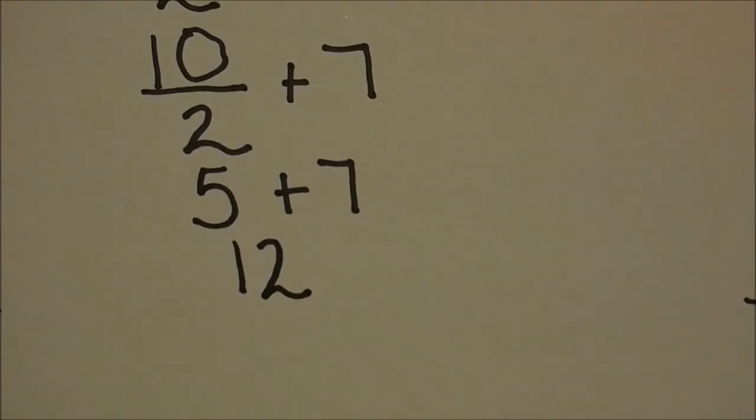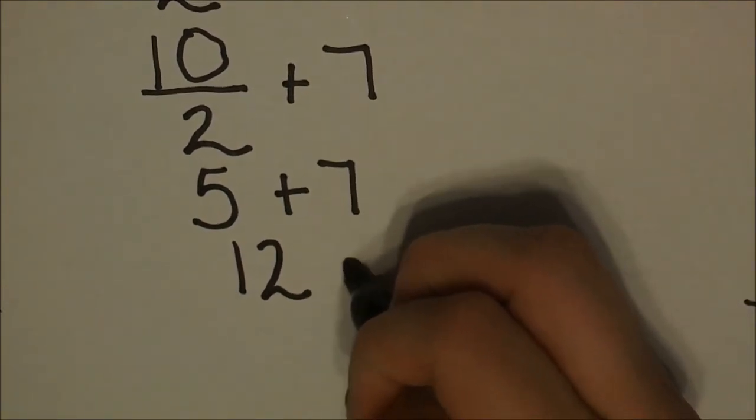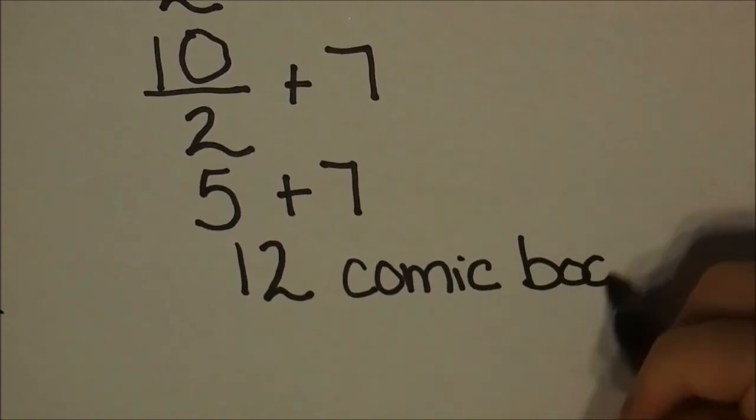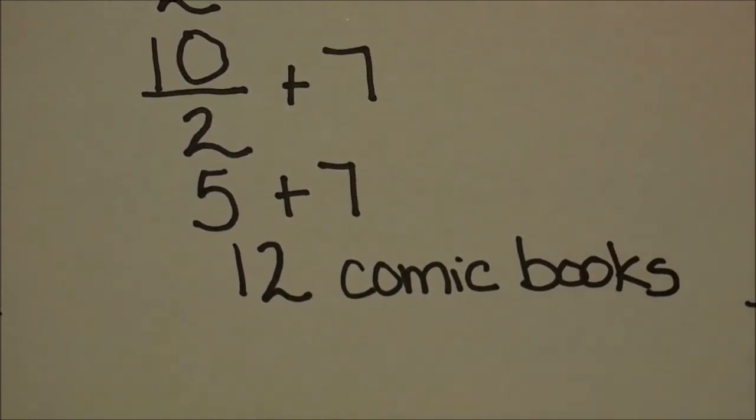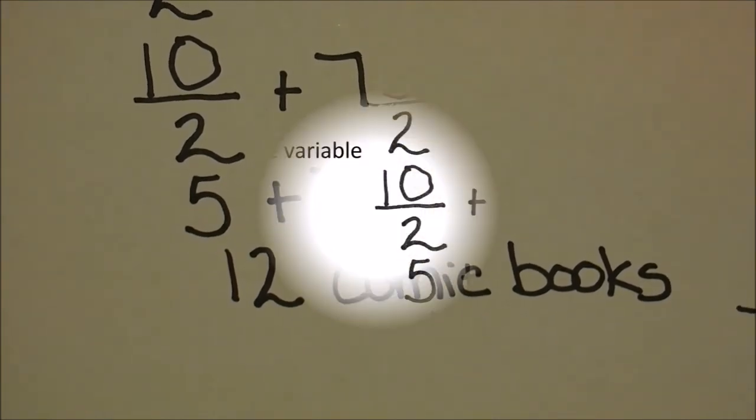Now this is a word problem, so we need a label. She has 12 comic books. And that's it. We've solved a two-step expression.